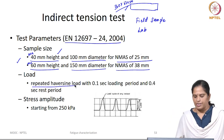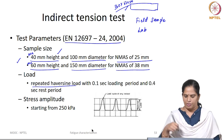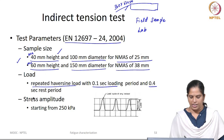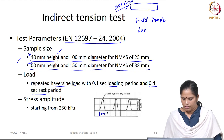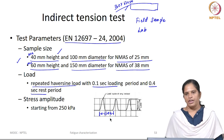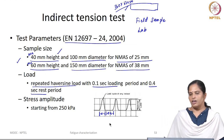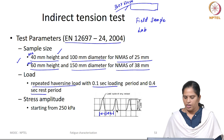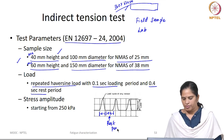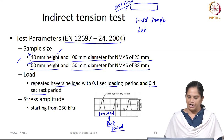The load applied is a repeated haversine compressive load along the diametrical plane with 0.1 second loading and 0.4 second rest period. With a load-controlled test, there will be accumulation of residual strain at the end of every loading cycle. To avoid this accumulation of residual strain, this EN standard recommends conducting this test with a 0.4 second rest period.